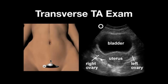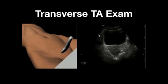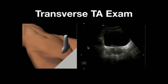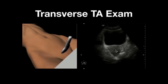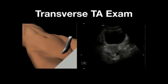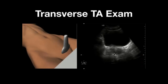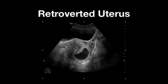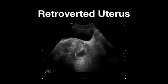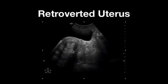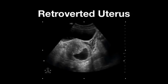For the transabdominal transverse exam, place the indicator toward the patient's right, just cephalad to the pubic symphysis. This provides an anterior-posterior, right-left orientation. The urinary bladder is anterior, and you get a short-axis view of the uterus with the cul-de-sac posteriorly. Angle the transducer in a caudal then cephalad direction, sweeping from the cervical region all the way up to the uterine fundus to fully assess the uterus — including in the patient with a retroverted uterus.